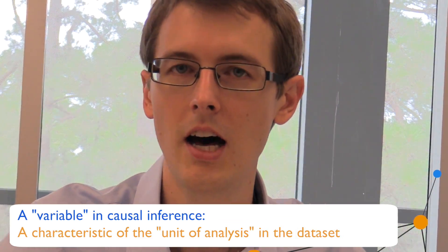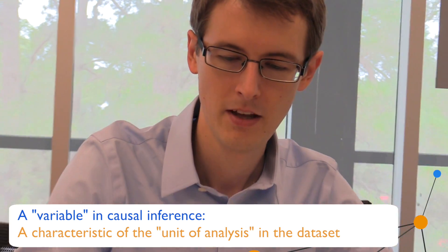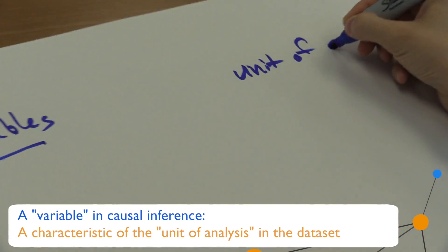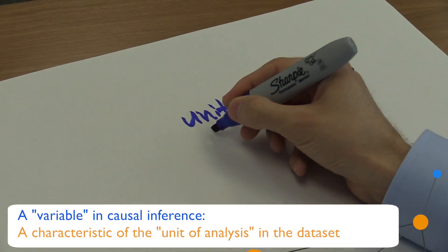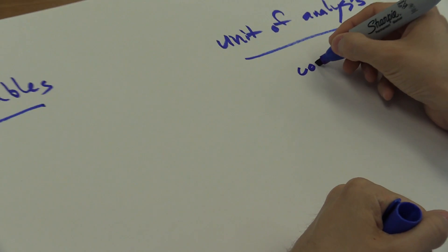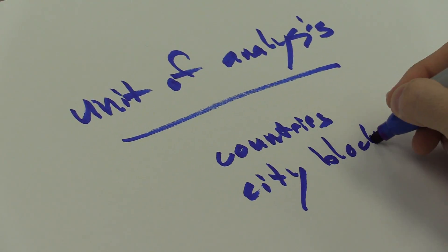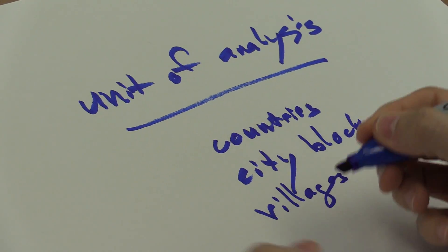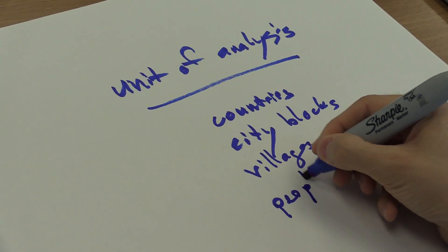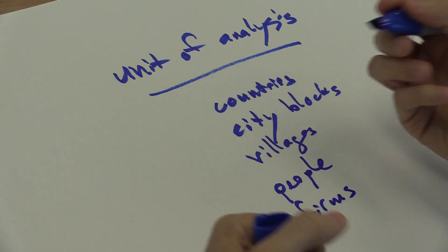A variable is just some characteristic of the unit of analysis. The unit of analysis refers to things like countries, city blocks, people, villages, and firms — these are the things that we're going to analyze, the things that are in our datasets. So we have data on different people, data on different countries, data on different villages.